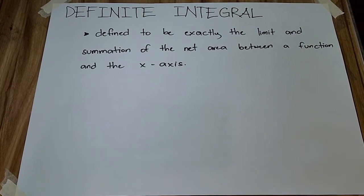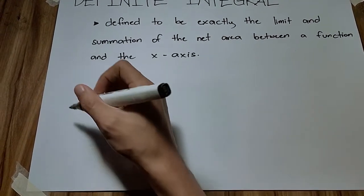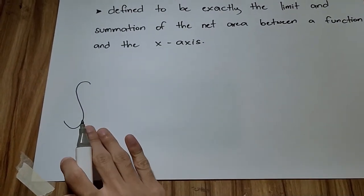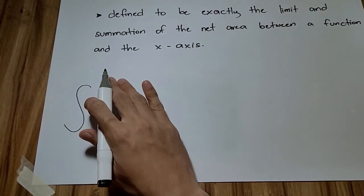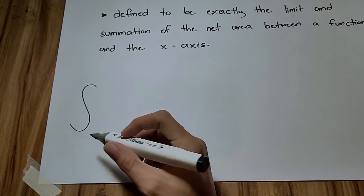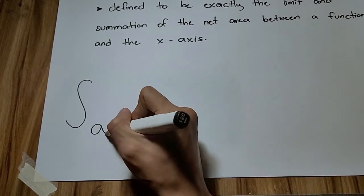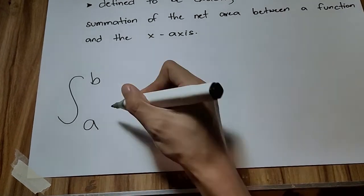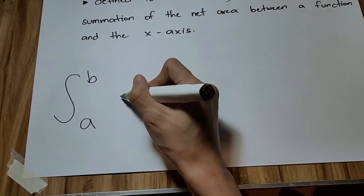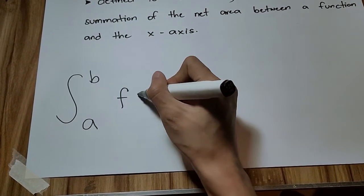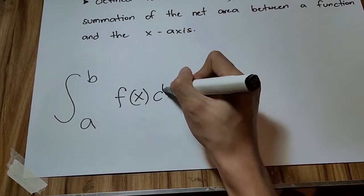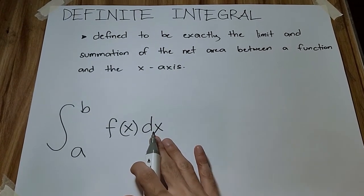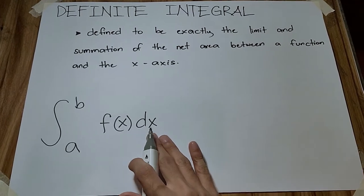When we see an integral, the sign will look like this. And it has a lower limit and an upper limit. Let's say, a will be the lower limit and b is the upper limit. Then the function f of x dx. This dx means that we will be solving for the vertical strip.